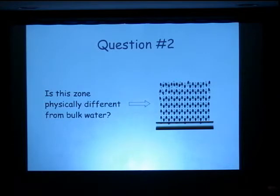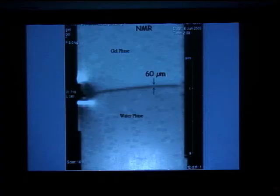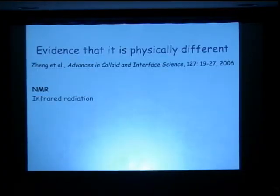Next question is, I've implied that this zone is really different from ordinary bulk water, but obviously I haven't proved it. Is this zone physically different? Last year we published a paper showing several methods that suggested it was different. The first one is NMR. We took a polyvinyl alcohol gel with a 50 to 100 micron exclusion zone. This is an NMR T2 map, and it shows rotationally restricted water at the interface, a zone that extends roughly the size of the exclusion zone.